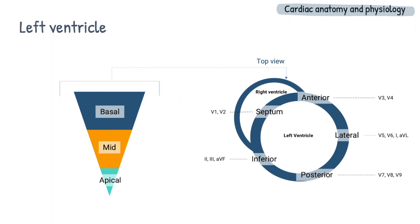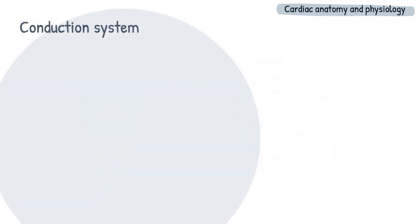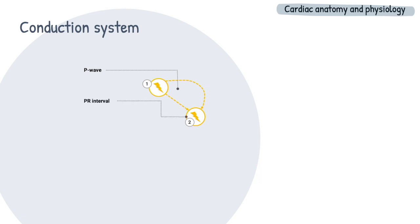The heart is controlled by a conduction system, which starts with the sinoatrial node, located in the right atrium, which initiates the depolarization and subsequent contraction of the myocytes. This is denoted by the P wave on the ECG and represents atrial contraction. The wave of depolarization moves across the atria to the atrioventricular node, denoted by the PR interval.